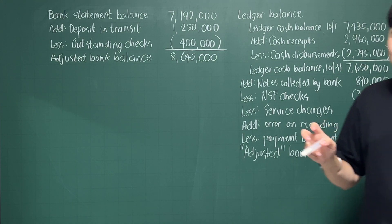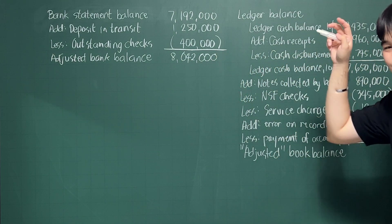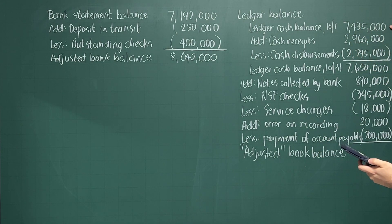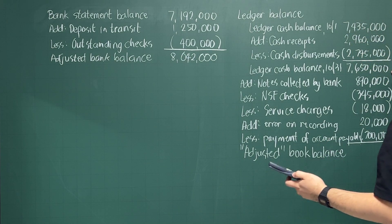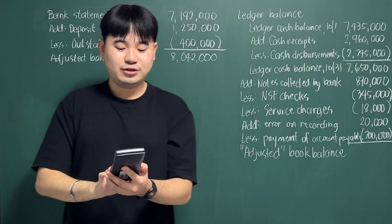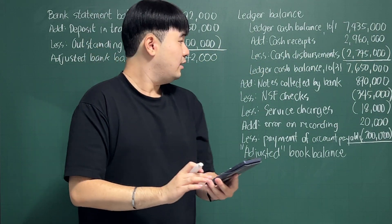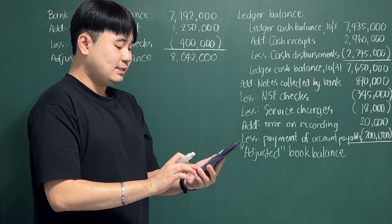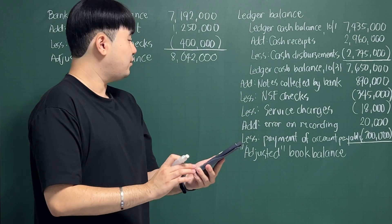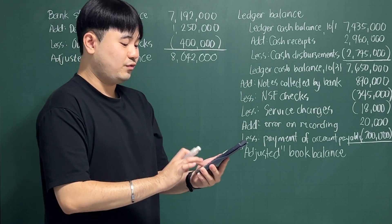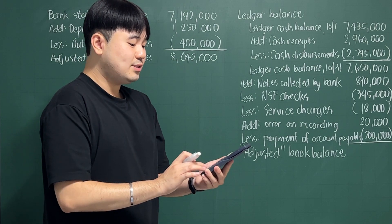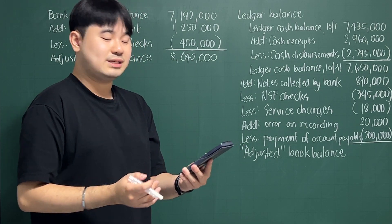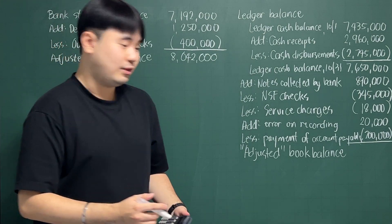And then on the book side. I have put quotation marks adjusted because we don't know if that's the real one. So we start here. You don't have to start here. It's already done. So $7,650,000. And then you add your notes collected of $890,000, less NSF checks of $345,000, less service charges of $18,000, add back your $20,000 and deduct the correct amount of payment of account payable of $200,000. $7,997,000.